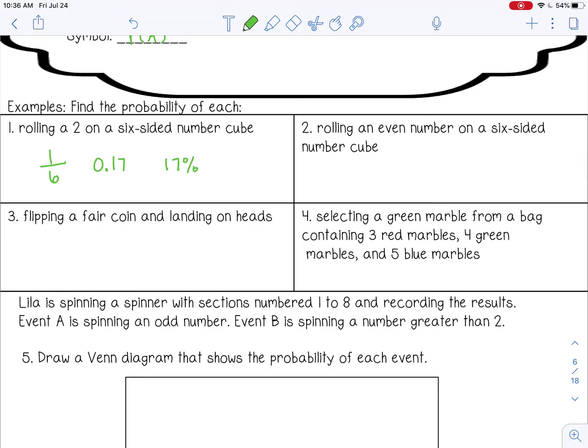Number 2. Rolling an even number on a six-sided number cube. So think about the even numbers. There are 2, 4, and 6. So that's 3 even numbers out of 6 total numbers. So 3 out of 6. You always want to reduce. So that would be 1 half. As a decimal, that would be 0.5, or 50%.